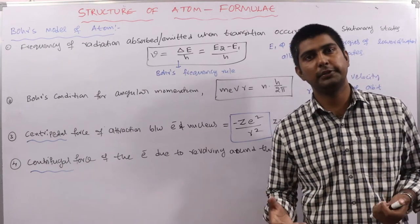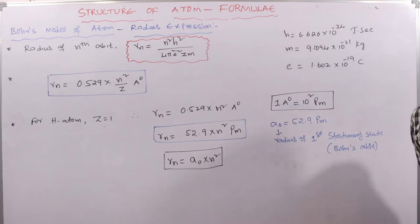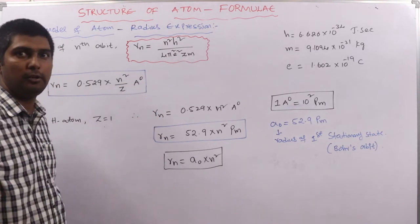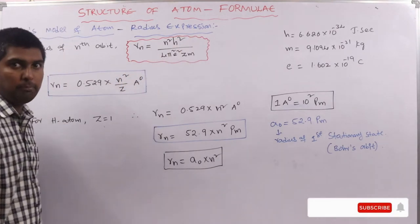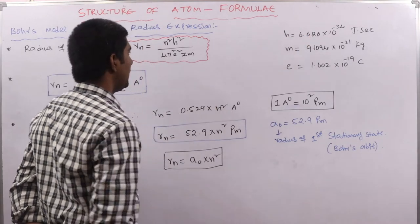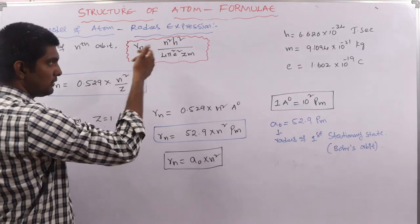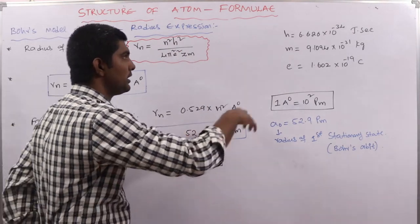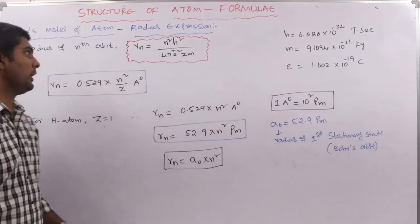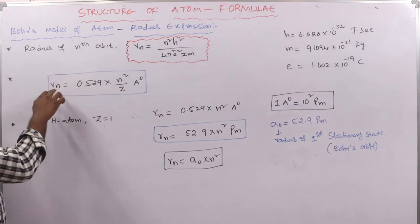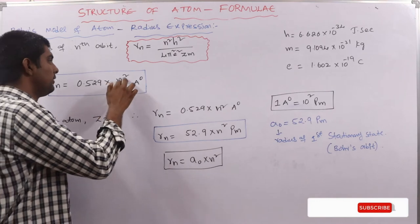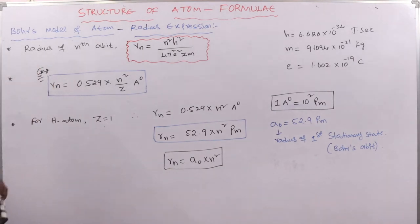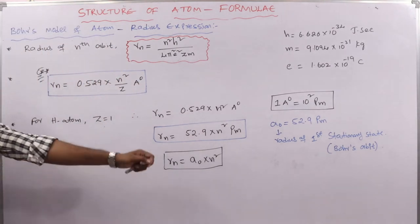The radius of the nth orbit is rn = n²h² / (4π²e²Zm), where n is the orbit number, h is Planck's constant, e is the charge of the electron, Z is the atomic number, and m is the mass of the electron. After substituting constants: rn = 0.529 × n²/Z ångström.